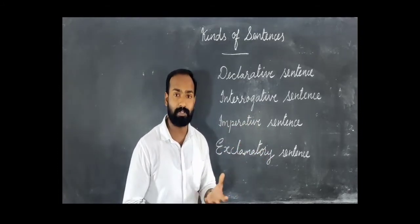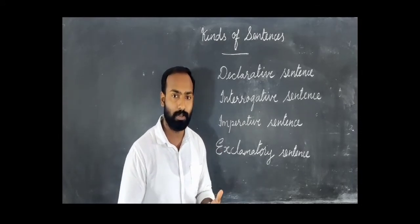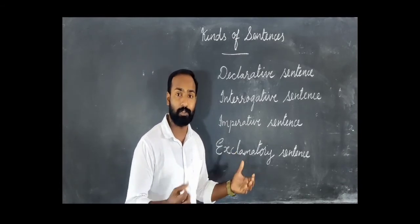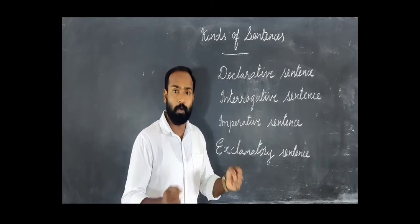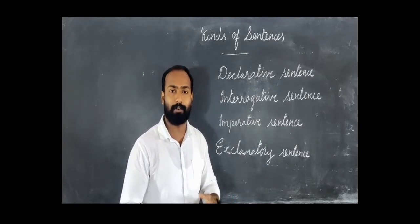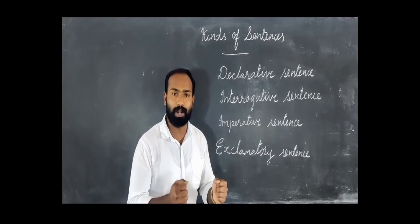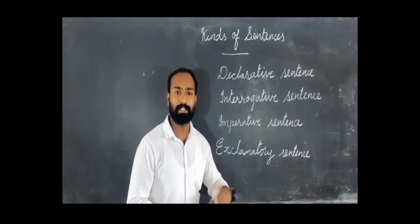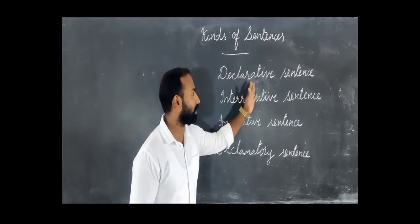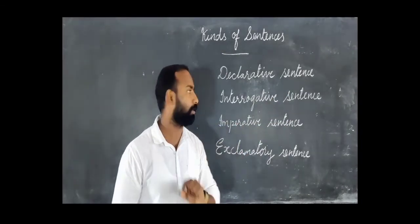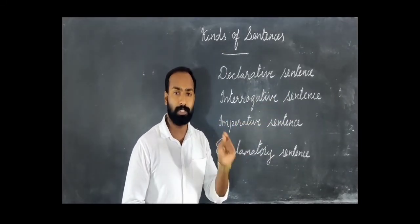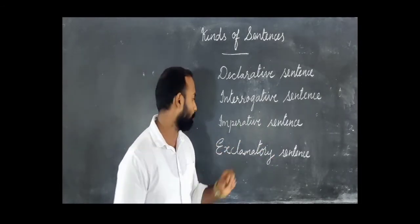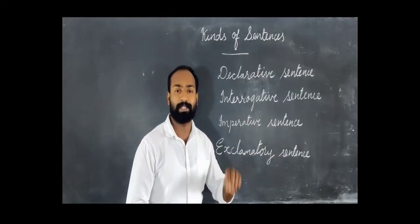The last type is the exclamatory sentence. What is an exclamatory sentence? It shows a sudden, strong feeling. For example, 'We won!' — after a tight match, we say 'We won!' with a strong feeling. It ends with an exclamation mark. So: a declarative sentence ends with a full stop; an interrogative sentence ends with a question mark; an imperative sentence ends with a full stop; and an exclamatory sentence ends with an exclamation mark.